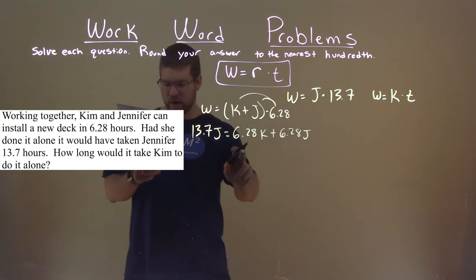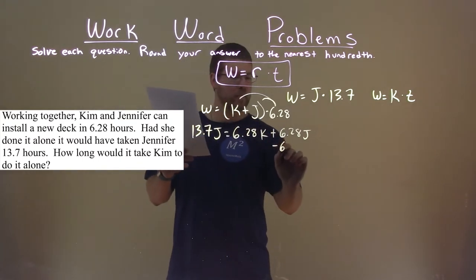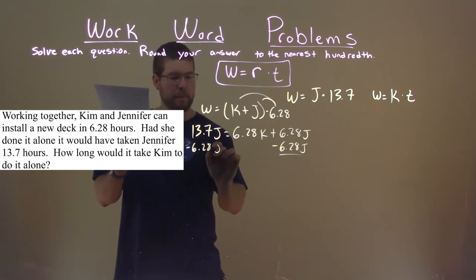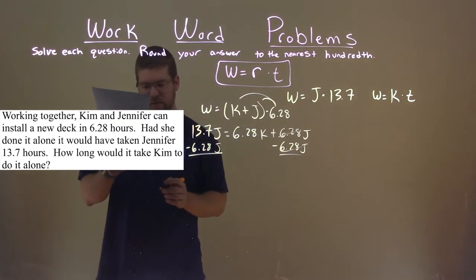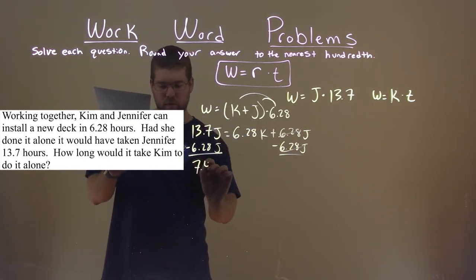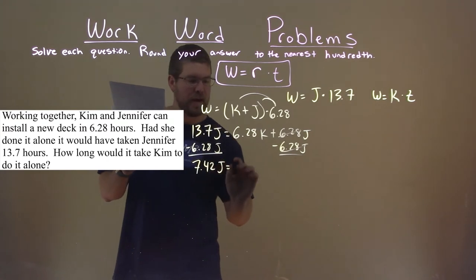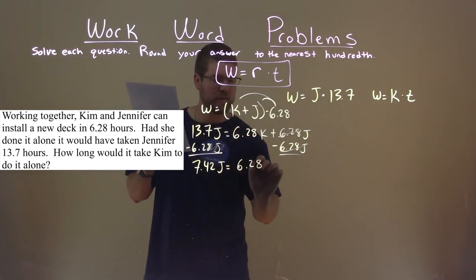Now I'm going to combine my like terms. So I'm going to subtract the 6.28 J to both sides. And that comes out to be, well, this cancels, and then 13.7 minus 6.28 is 7.42 J, and that's equal to the 6.28 K.